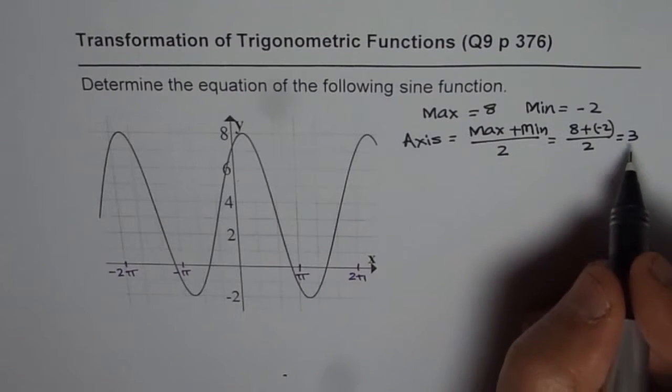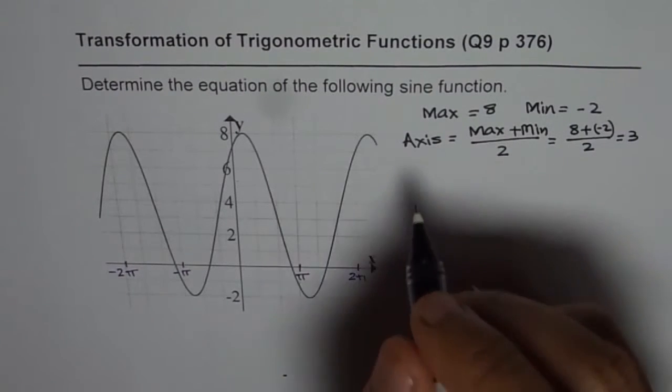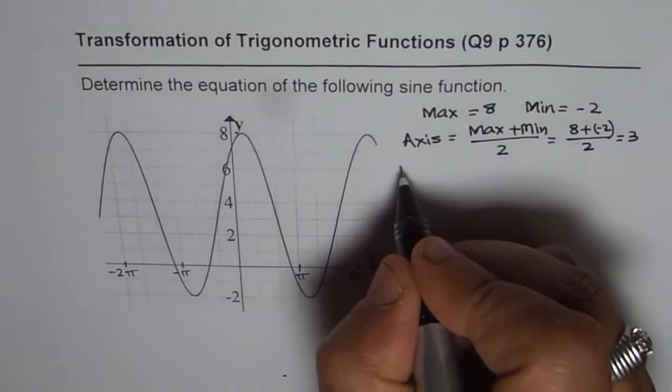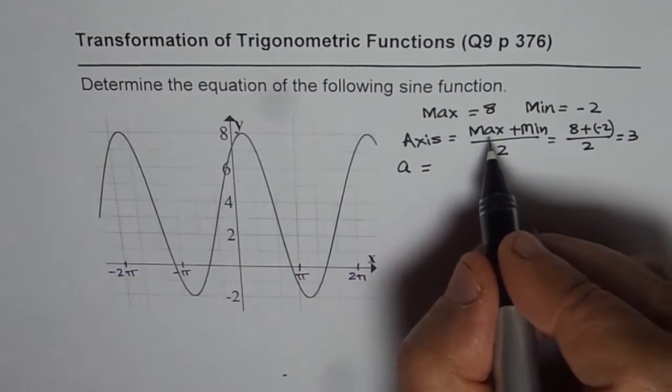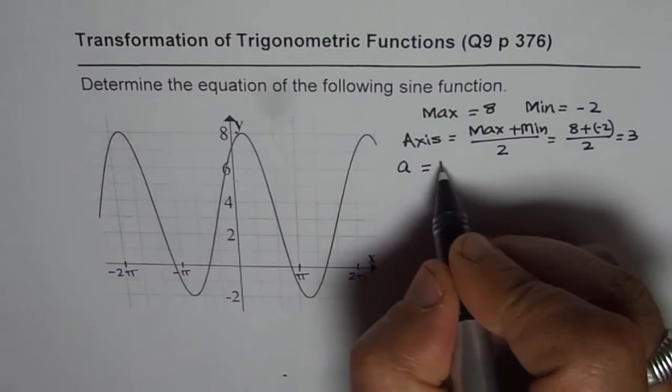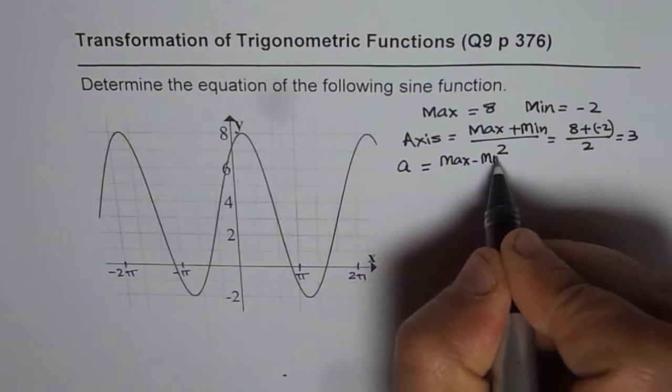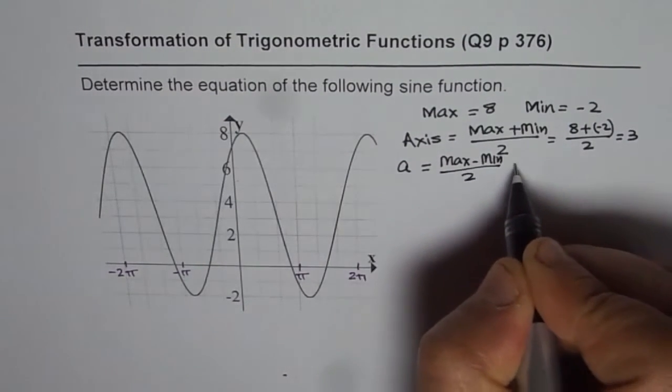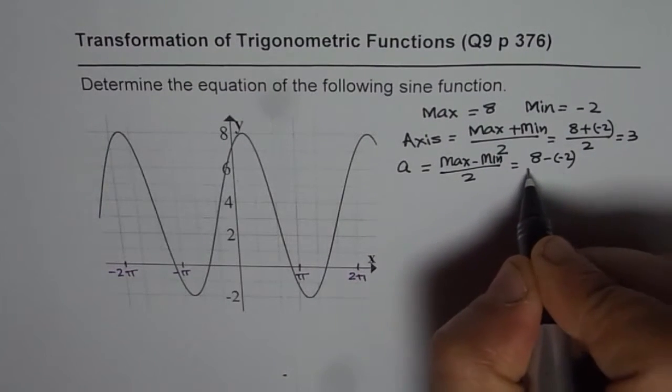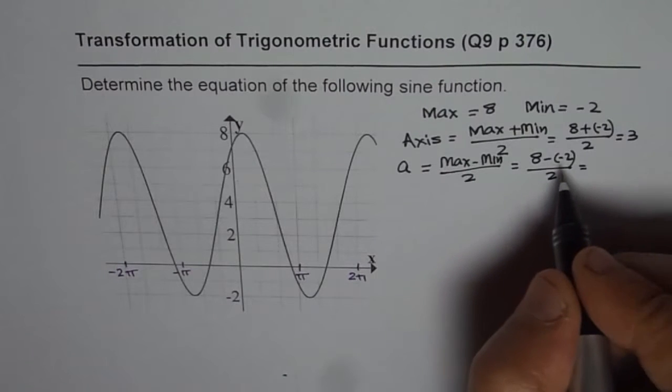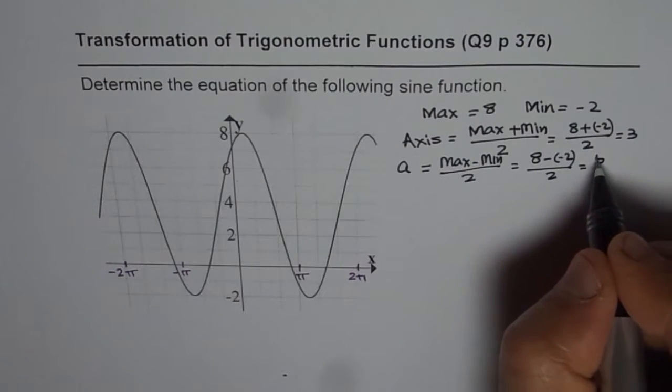Now axis is 3. Then we should find the amplitude. Now amplitude A will be equal to maximum minus minimum divided by 2. Maximum is 8, 8 minus minus 2 divided by 2 gives us 10 divided by 2 as 5.